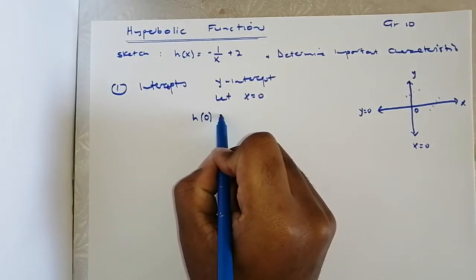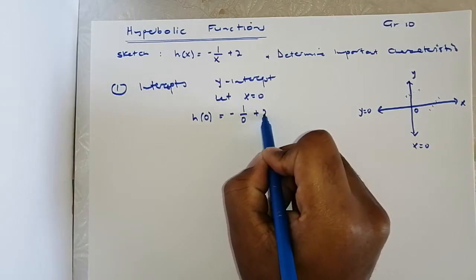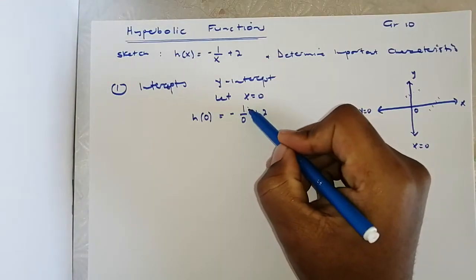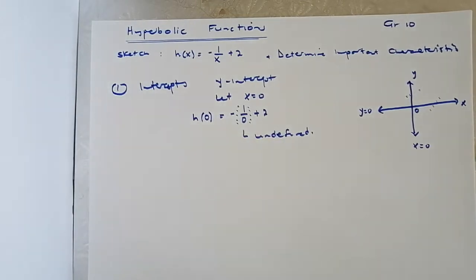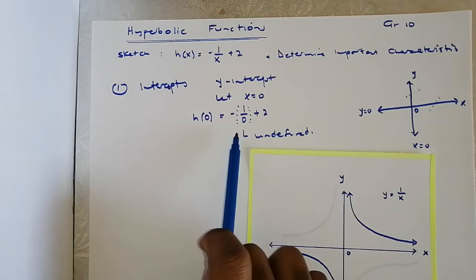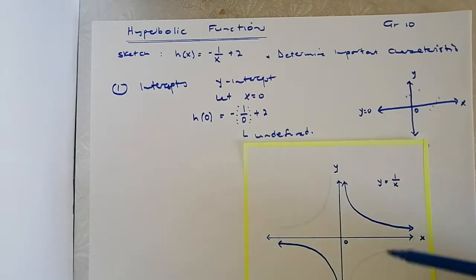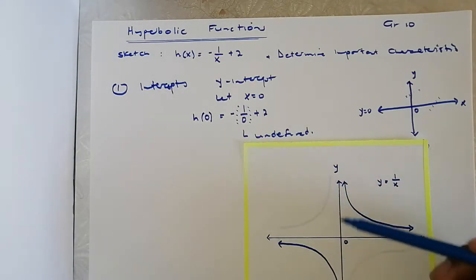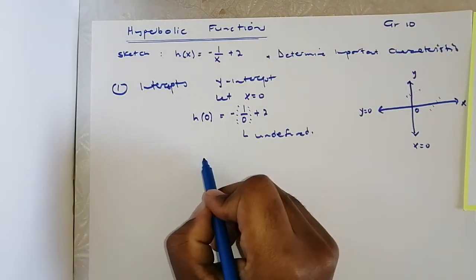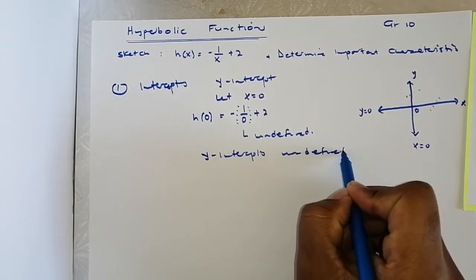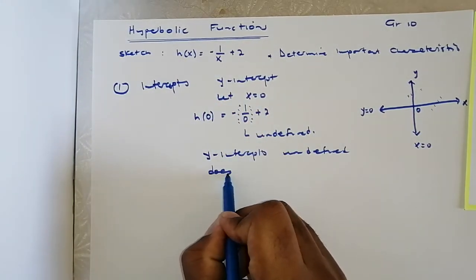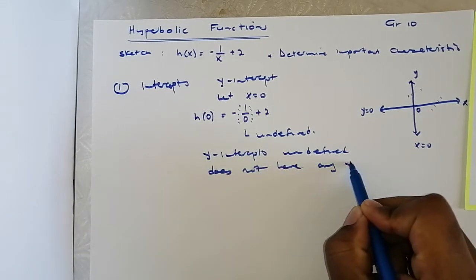So it's going to be h(0) equals negative one divided by zero plus two. Now we have a problem — anything divided by zero is undefined. This is a hyperbolic graph, so if the function does not have a y-intercept, it means there is no way the graph will actually touch or cross the y-axis. The y-intercept is undefined, so this function does not have any y-intercept.